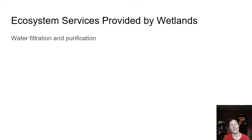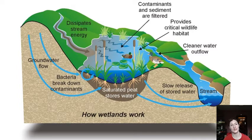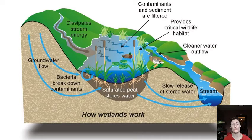Water filtration and purification is a huge ecosystem service. We saw that in play at the Arcata Marsh and at the Eureka wastewater treatment facility — we saw wetlands on the outside of the plant when we walked the Hikshari trail. Here's a diagram of how wetlands work: wetlands tend to be located in lower areas where water flows by gravity, because they form where the water table comes above the surface. We see water traveling across the terrestrial surface, coming downward and picking up contaminants as it travels, then reaching the wetland.